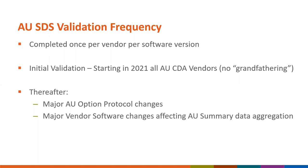One of the most frequently asked questions is how often to validate. The AU SDS validation process is expected to be completed once per vendor per software version. Starting in 2021, all vendors creating AU CDA files will need to have successfully passed the initial AU SDS validation in order for their AU CDA files to be manually uploaded or imported via direct into NHSN—no vendor will be grandfathered in. The NHSN team requires re-completion of the AU SDS validation process only when major changes have been made to the AU option protocol or when major changes are made to your software that might affect the AU summary data aggregation.